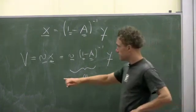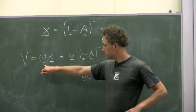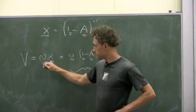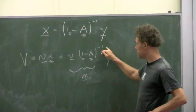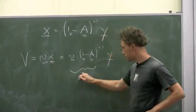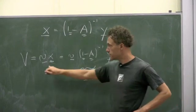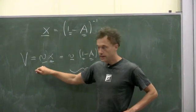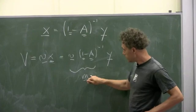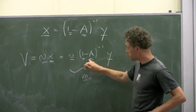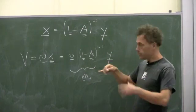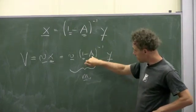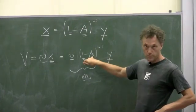So the same value added is either a product of a direct intensity and gross output or of a multiplier and final demand. Since final demand is smaller than gross output, you can straight away tell that the multiplier is always larger than the intensity. And that is because the multiplier contains the intensity, but also all indirect supply chain economic interdependencies that are inherent in the matrix A, which comes from the input-output table.